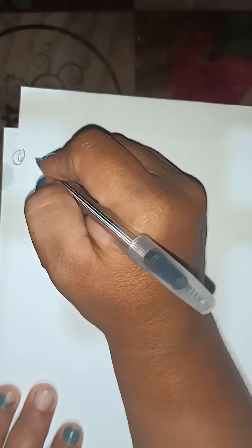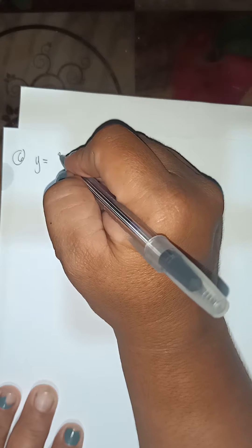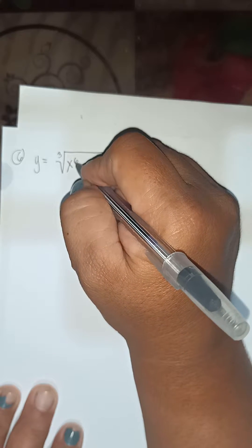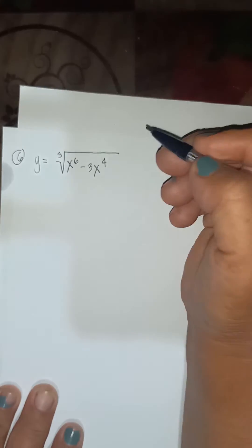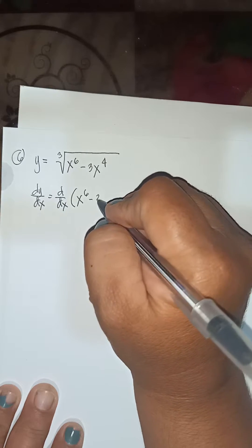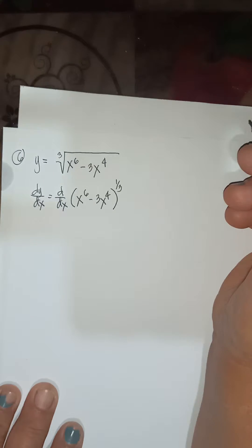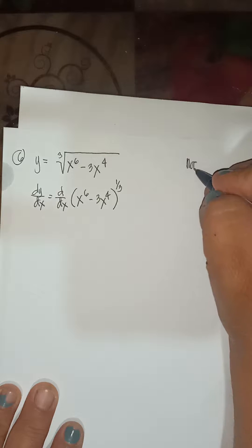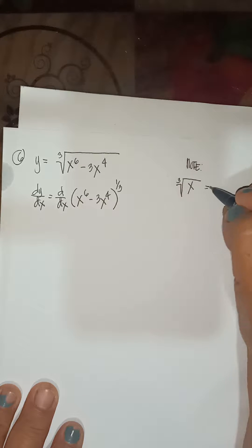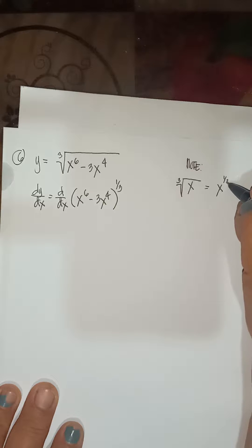Okay, we have example number 6. So for example number 6, given y is equal to the cube root of x to the 6 minus 3x to the 4th. So the first line, dy/dx of x to the 6 minus 3x to the 4th raised to 1/3. Note here that the cube root of x is equivalent to x raised to 1/3.